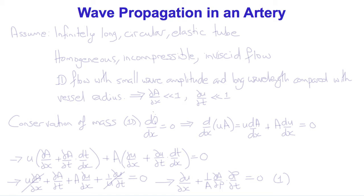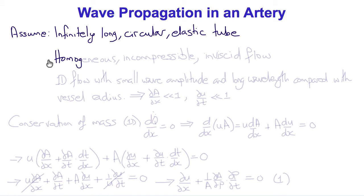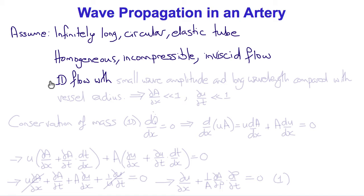Another consequence of vascular elasticity is wave propagation. The pulse wave is an elastic wave that propagates along the vessel wall. We can derive the wave equation for pulse wave propagation by making several simplifying assumptions: the vessel is an infinitely long circular elastic tube; the fluid flow is homogeneous, incompressible, and inviscid; the flow is one-dimensional; and the amplitude of the wave is small and the wavelength is long compared with the vessel radius.